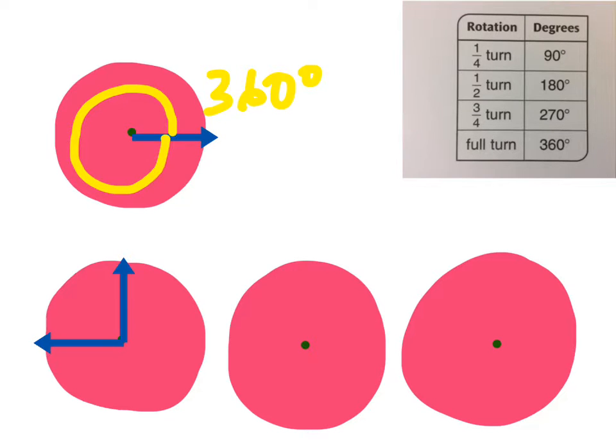And let's say next if we have a one-fourth turn. So this is one-fourth turn here, that's going to be 90 degrees. So this angle here is 90 degrees. And a half turn, like we have here, is going to be 180 degrees.